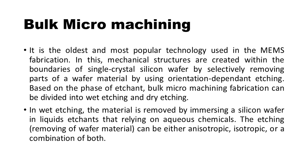Bulk micro-machining is the oldest and most popular technology used in MEMS fabrication. In this, mechanical structures are created within the boundaries of a single crystal silicon wafer by selectively removing parts of the wafer material using orientation dependent etching. Based on the phase of etchant, bulk micro-machining fabrication can be divided into wet etching and dry etching.